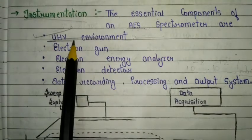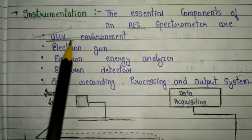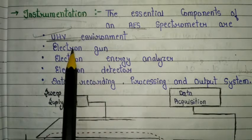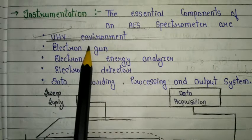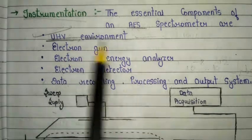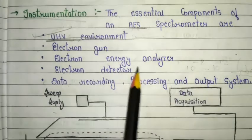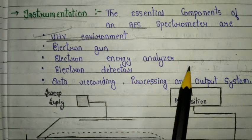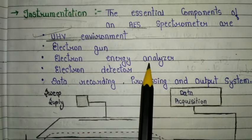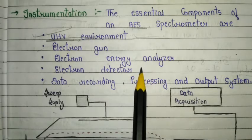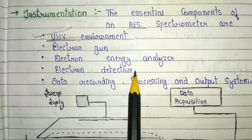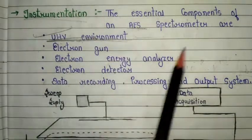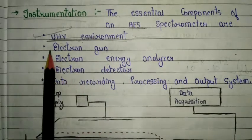The first essential component is the UHV environment — UHV stands for Ultra High Vacuum. It is characterized by a pressure lower than 10⁻⁸ to 10⁻¹² mbar. It is very important in scientific research because experiments often require a chemically clean sample surface with the absence of any unwanted adsorption.